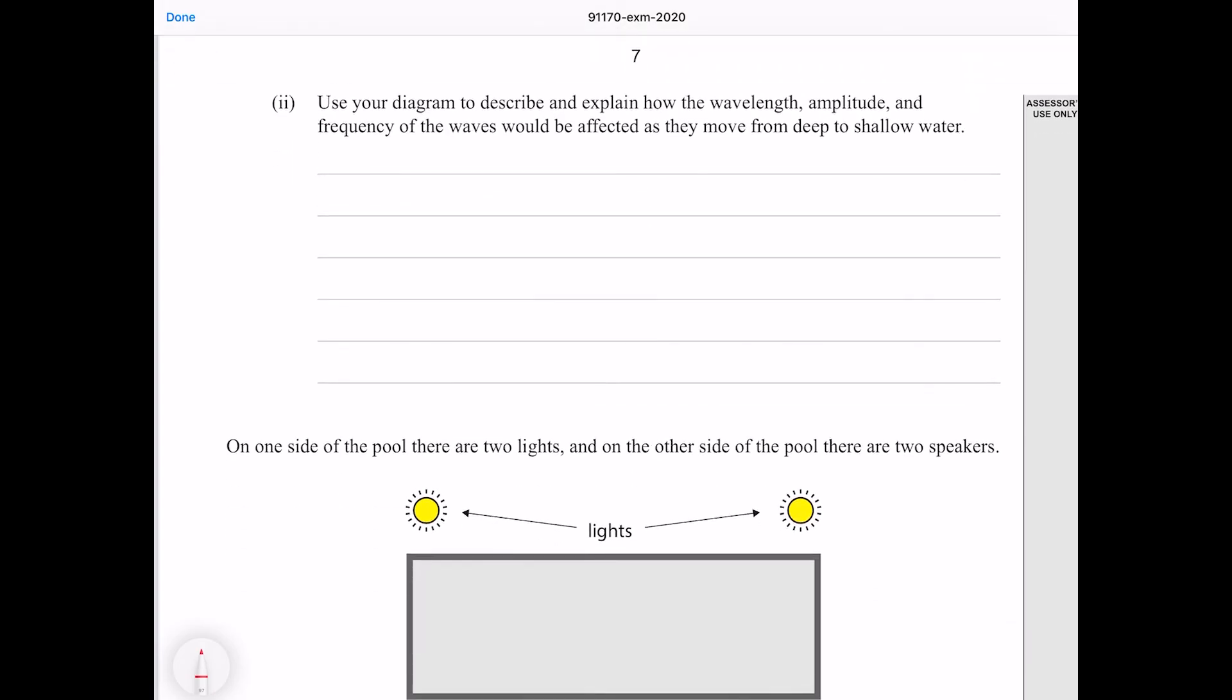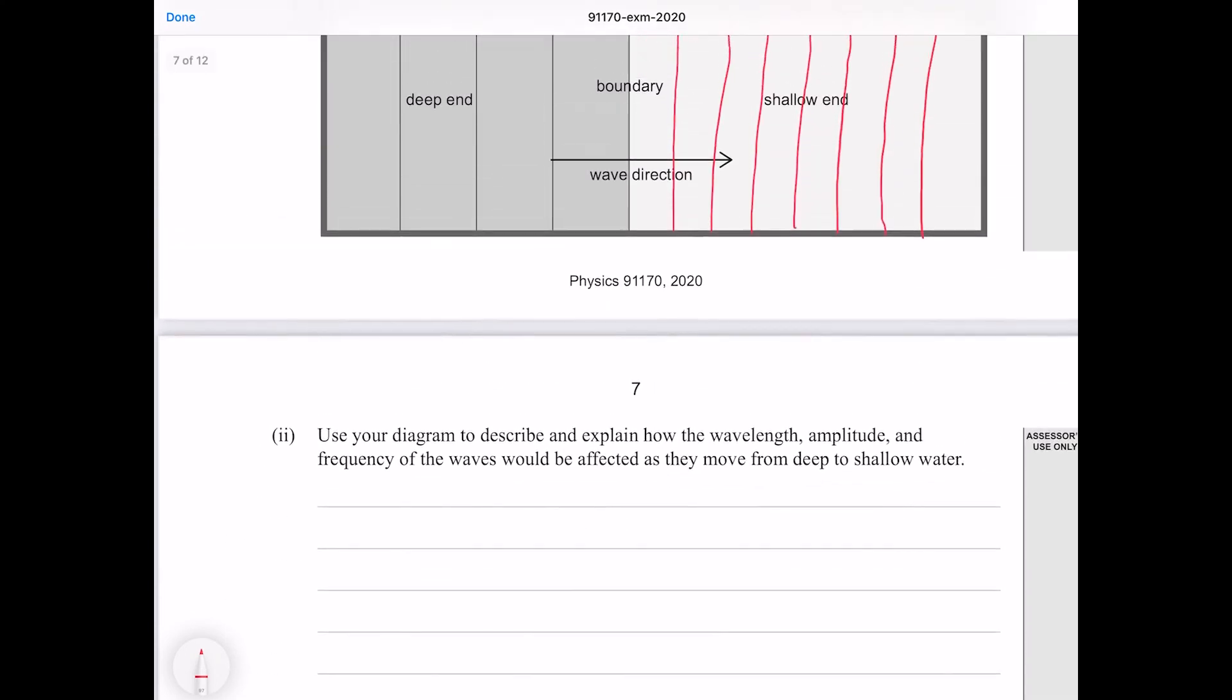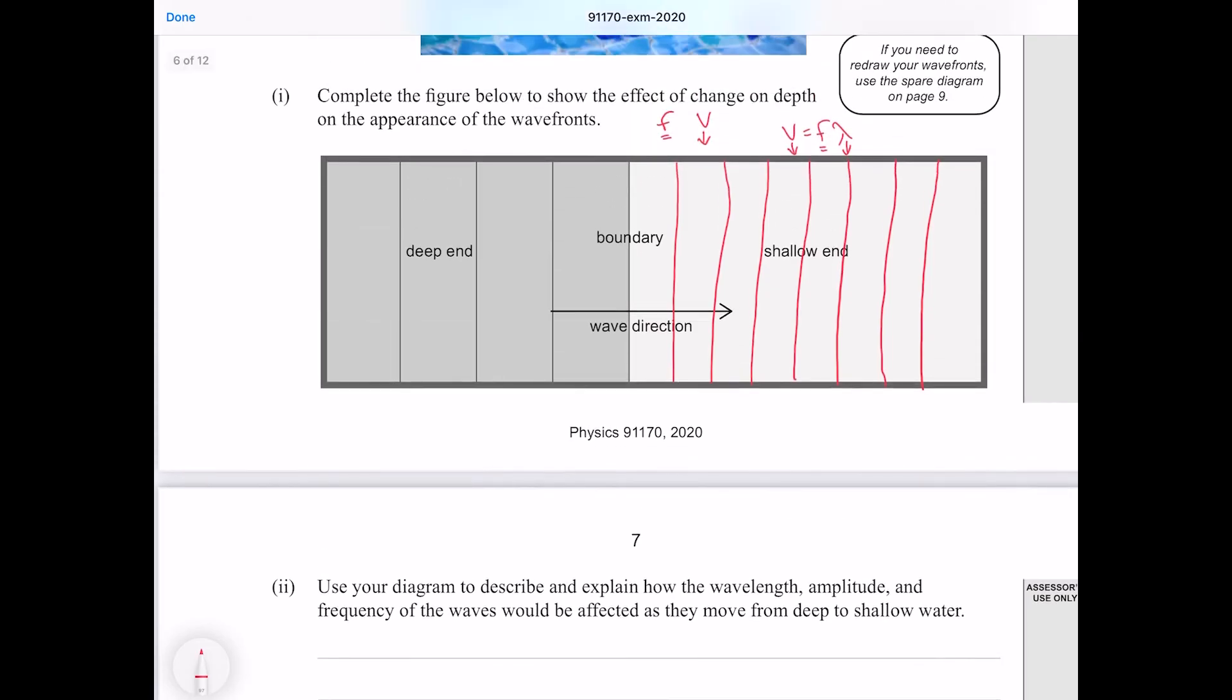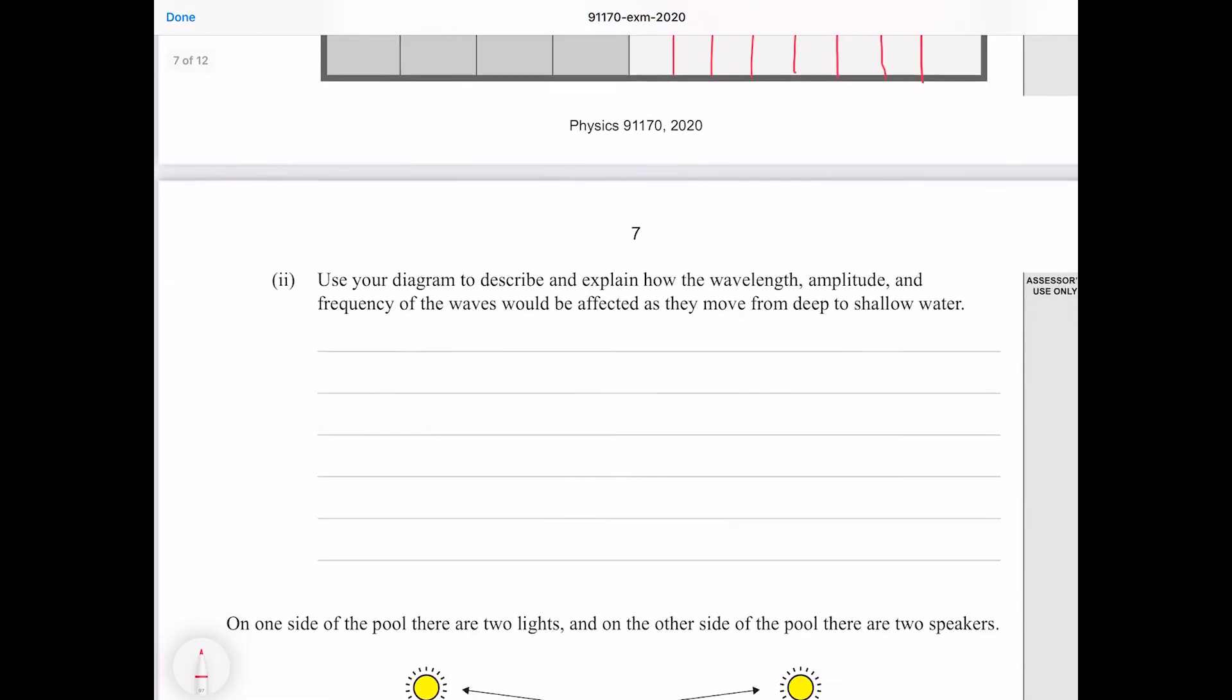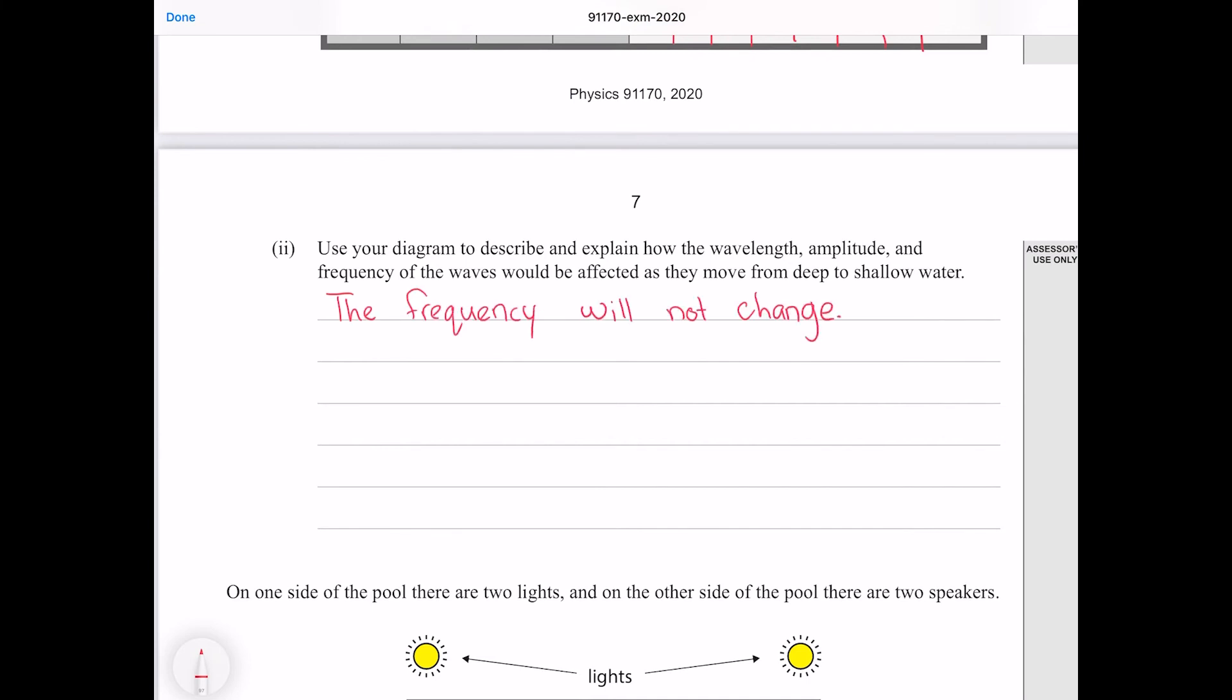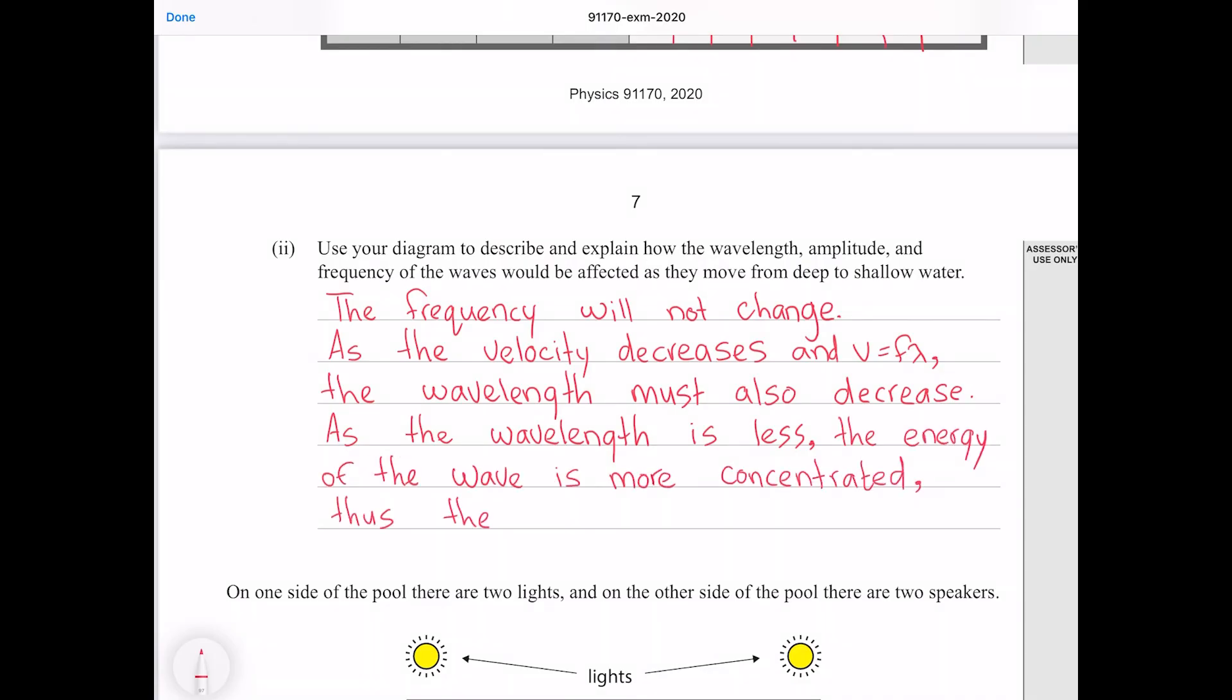Use your diagram to describe and explain how the wavelength, amplitude and frequency of the waves would be affected as they move from the deep to the shallow water, which is for the most part what I was just explaining. We know that the frequency of the waves does not change because it just never does when we have refraction. However because we have a reduction in speed, we therefore have a reduction in wavelength. Now furthermore, because our waves are more bunched up, that is going to mean they're going to be taller, that the amplitude is going to increase. The frequency will not change. As the velocity decreases and v equals f lambda, the wavelength must also decrease. As the wavelength is less, the energy of the wave is more concentrated, thus the amplitude will increase.